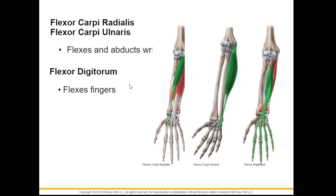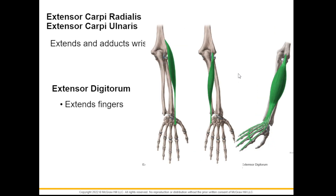We also have the flexor carpi radialis — radial meaning thumb side — and the flexor digitorum on each finger. Their job is to flex the wrist, while the flexor digitorum flexes the fingers. They are found on the anterior aspect of the forearm in anatomical position. On the posterior aspect we have the extensor carpi radialis and extensor carpi ulnaris, which extend and adduct the wrist, while your extensor digitorum extends the fingers.